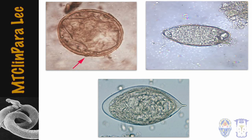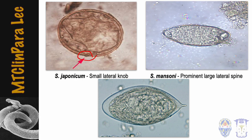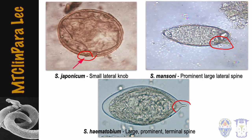To recap the three main human blood flukes by egg appearance: S. japonicum has a small lateral knob at the side of the ova; S. mansoni has a prominent large lateral spine also on the lateral or side portion; and S. hematobium has a large prominent terminal spine at the posterior end of the ova.